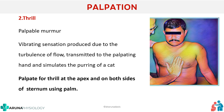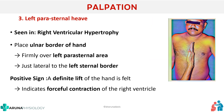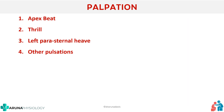Next, we will see about left parasternal heave. This is also an abnormal finding, usually seen in right ventricular hypertrophy. Whenever the right ventricle gets enlarged, you might get a left parasternal heave. To examine this, place the ulnar border of the hand firmly over the left parasternal area — parasternal means near the sternum. If there is right ventricular hypertrophy, there will be a brief lift to the hand. Finally, also check for any other pulsations in the precordium.